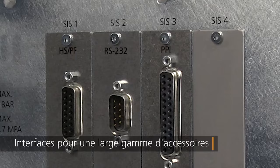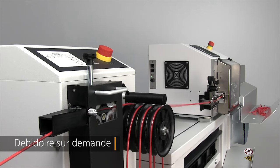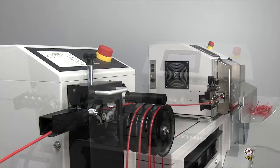Offrant la polyvalence d'un système exceptionnel, le EcoStrip 9380 est disponible avec des interfaces pour une large gamme d'accessoires périphériques, donc les dérouleurs, machines à imprimer et unités d'enroulement.